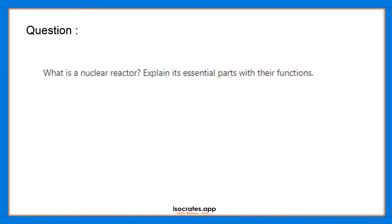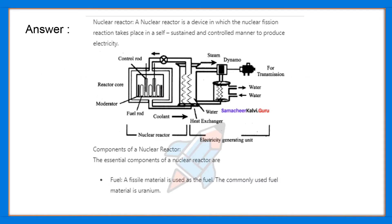A nuclear reactor is a device in which the nuclear fission reaction takes place in a self-sustained and controlled manner to produce electricity. In short, a nuclear reactor is used to produce electricity with the help of nuclear reactions, specifically fission reactions.